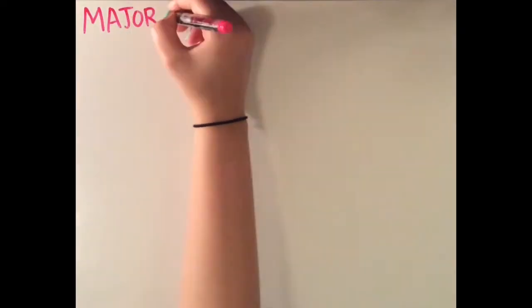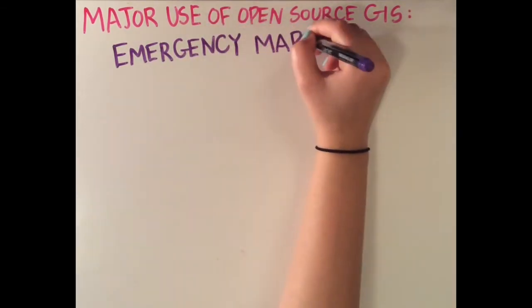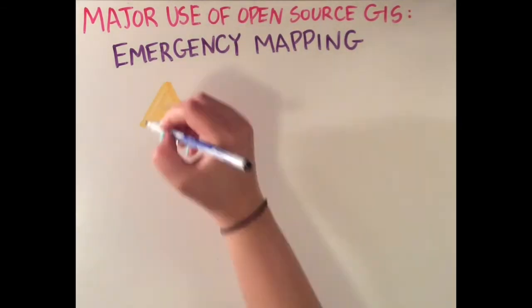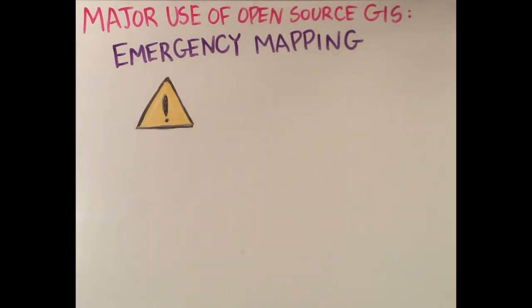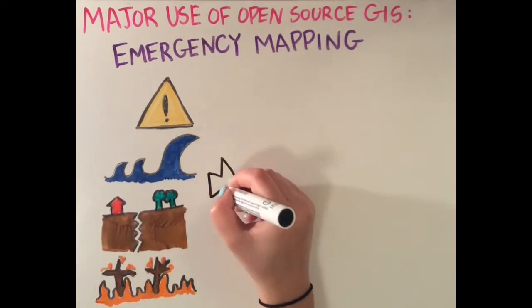A major use of open source GIS has been in its application to emergency management. GIS crowdsourcing operations involve mapping regions of the world that were recently hit by natural disasters, like tsunamis, earthquakes, forest fires, and others.